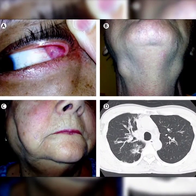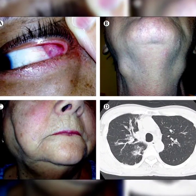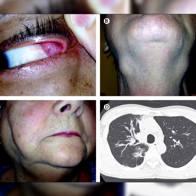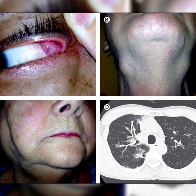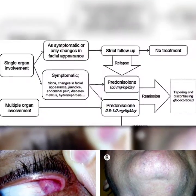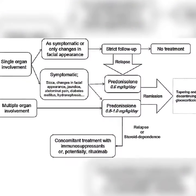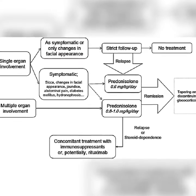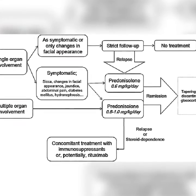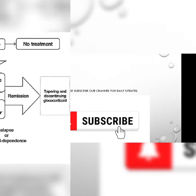Treatment: In untreated patients with active disease, the recommended first-line agent for induction of remission is glucocorticoids, unless contraindications exist. Steroid-sparing agents that have been used include rituximab, azathioprine, methotrexate, and cyclophosphamide. The common induction regimen is prednisolone 30–40 mg per day for 2–4 weeks, then gradually tapered over 3–6 months.